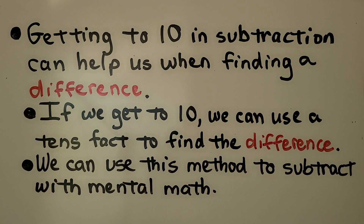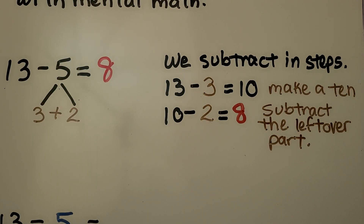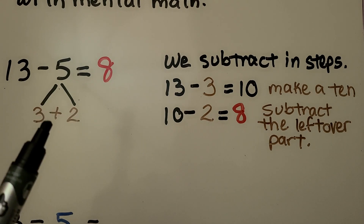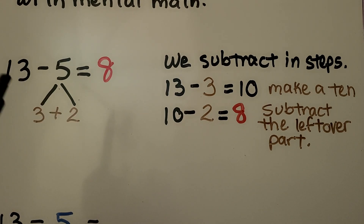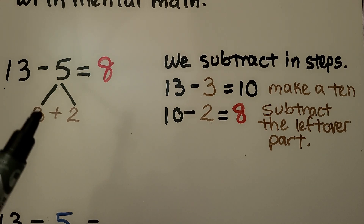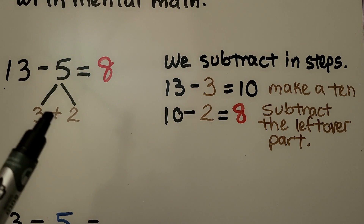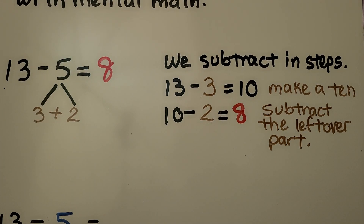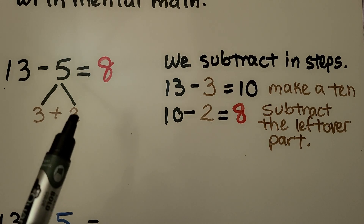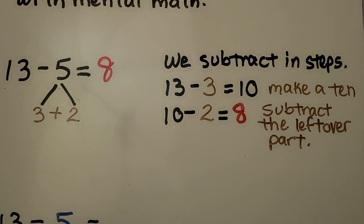Here we have 13 minus 5. We break the 5 apart into a 3 plus 2, because in order to make a 10 we need to take 3 away. That means one of the addends that will make this subtrahend needs to be a 3. So we subtract in steps: 13 minus 3 is equal to 10, making the 10. Then we go from the 10 and subtract that 2 that's left over.